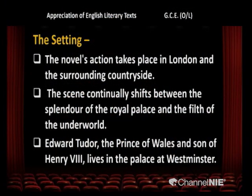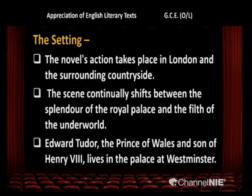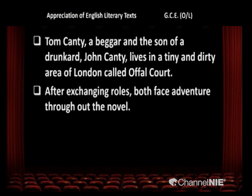Now we are going to discuss the setting. The novel's action takes place in London and the surrounding countryside. The scene continually shifts between the splendour of the royal palace and the filth of the underworld. Edward Tudor, the Prince of Wales and son of Henry VIII, lives in the palace at Westminster. Tom Canty, a beggar and son of a drunkard John Canty, lives in a tiny and dirty area of London called Offal Court. After exchanging roles, both face adventure throughout the novel.